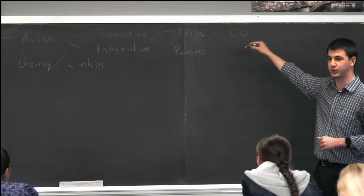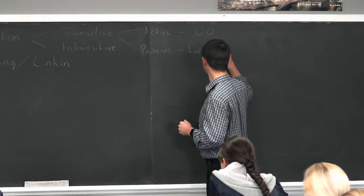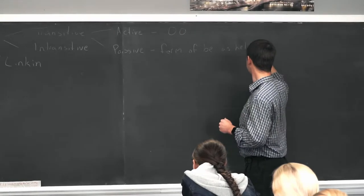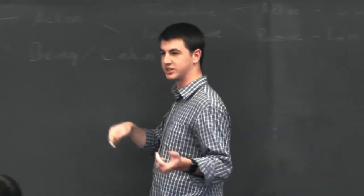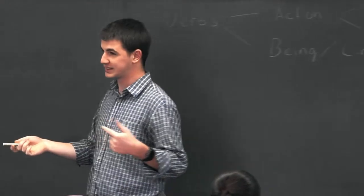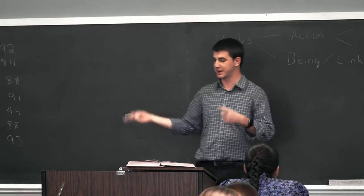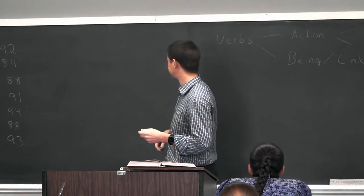What is different about a passive voice? So it always has a form of be as a helping verb. So the ball was kicked, the window was broken. We always have a form of be before the verb when we have passive voice, and of course passes it back to the subject. So let's look at a couple of example sentences.